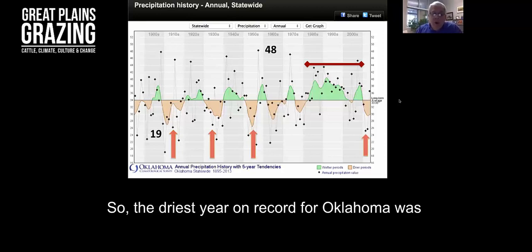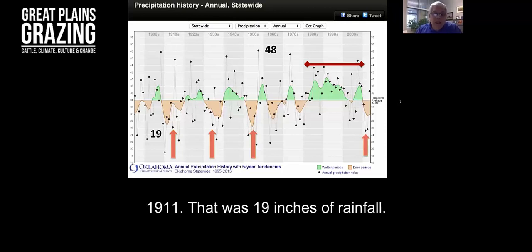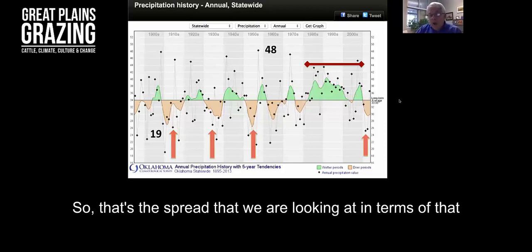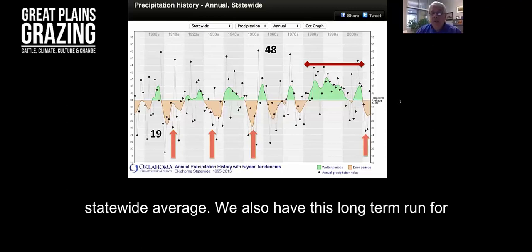The driest year on record for Oklahoma was 1911. That was 19 inches of rainfall. Wettest came in in 1957 and that was 48 inches of rainfall. So that's the spread that we're looking at in terms of that statewide average.